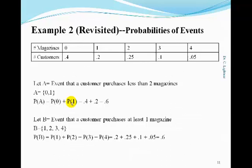This sum will give us the probability of this event occurring. We see that there is a 0.6 probability that any individual customer that is called will purchase less than 2 magazines.